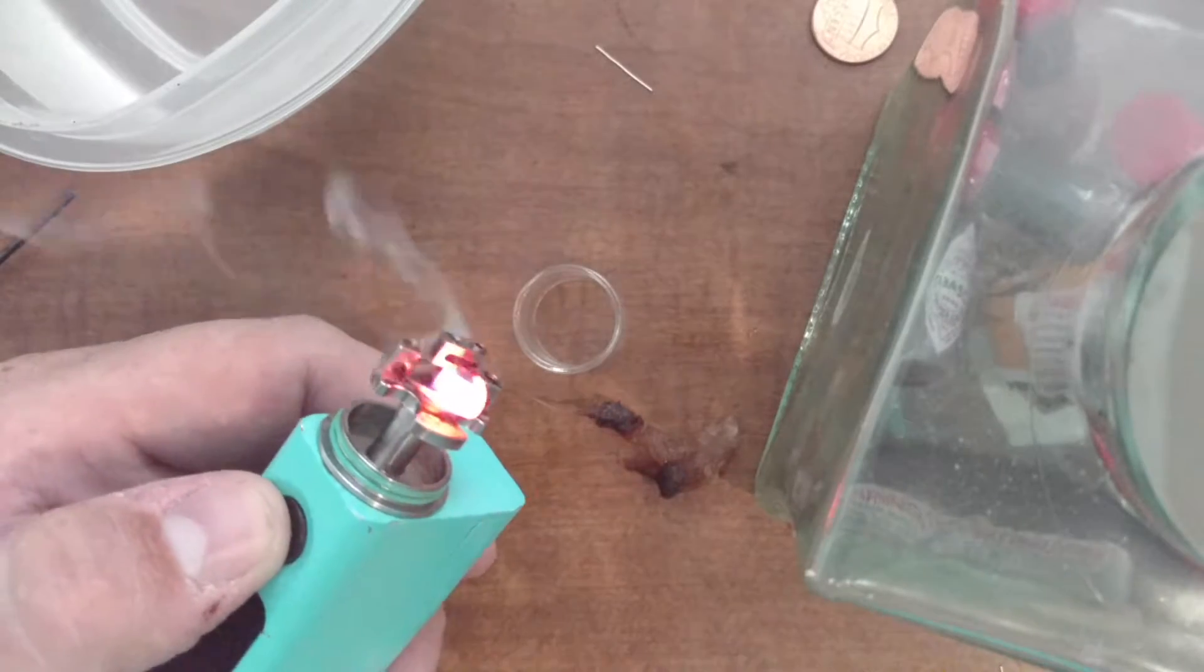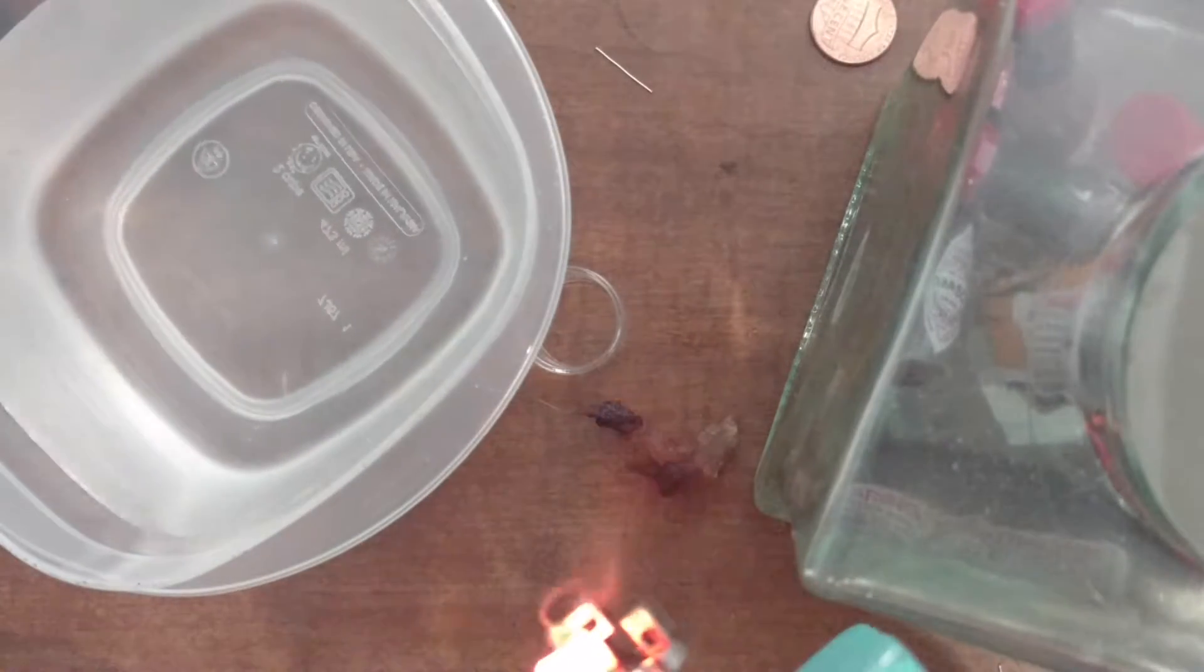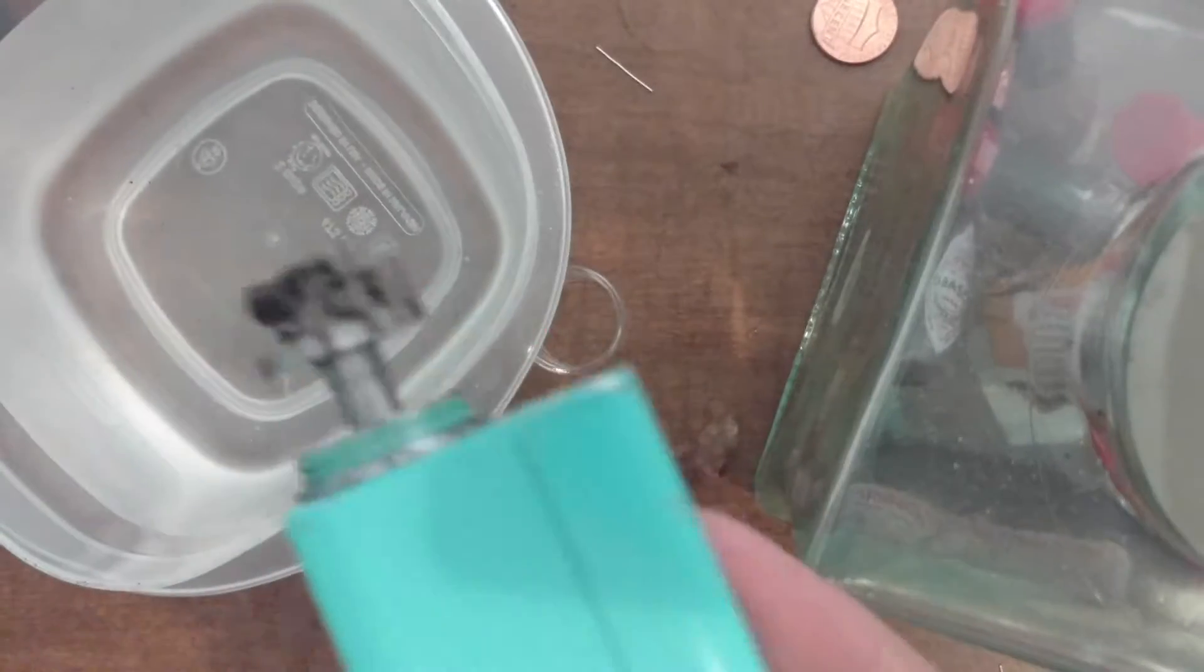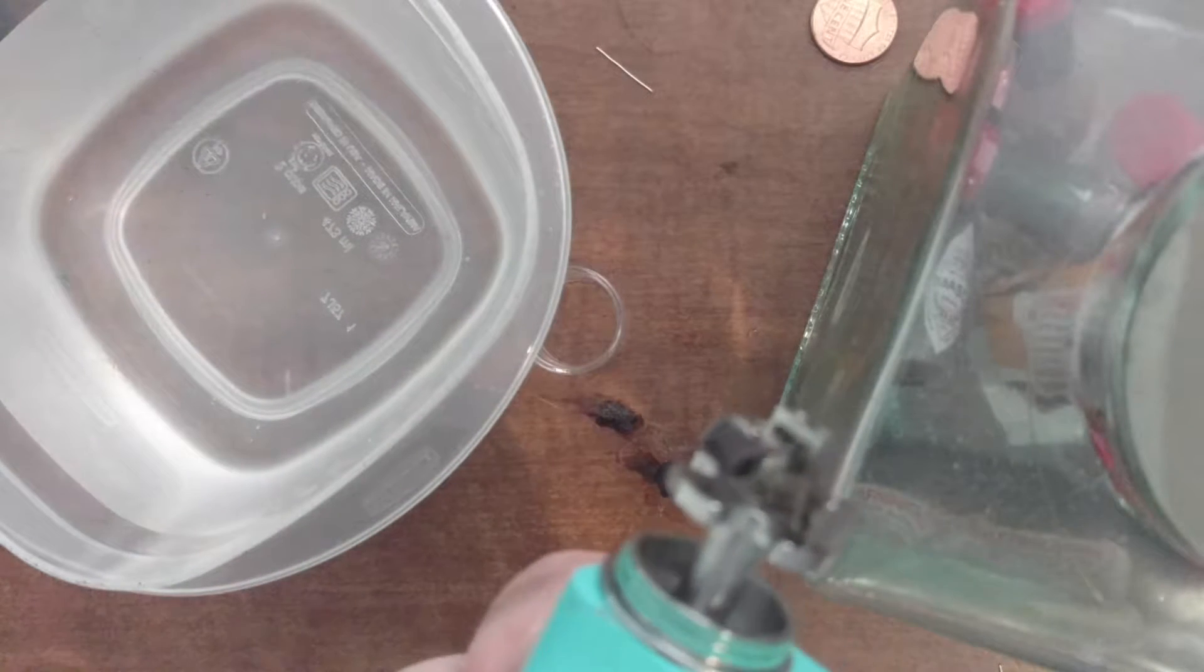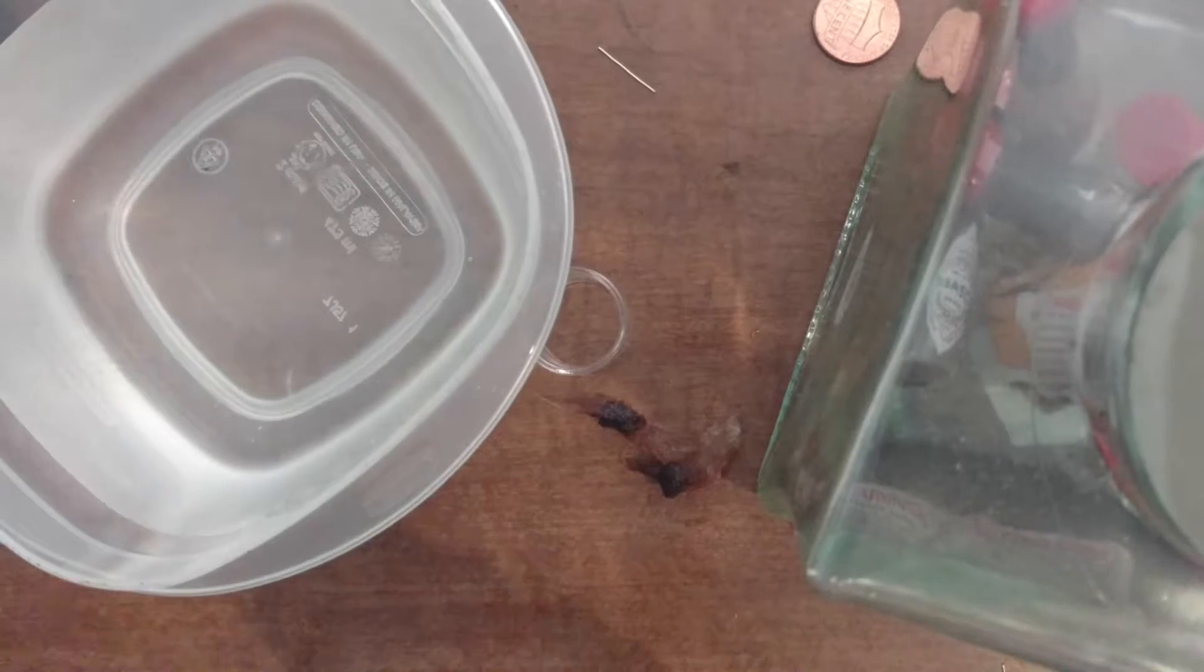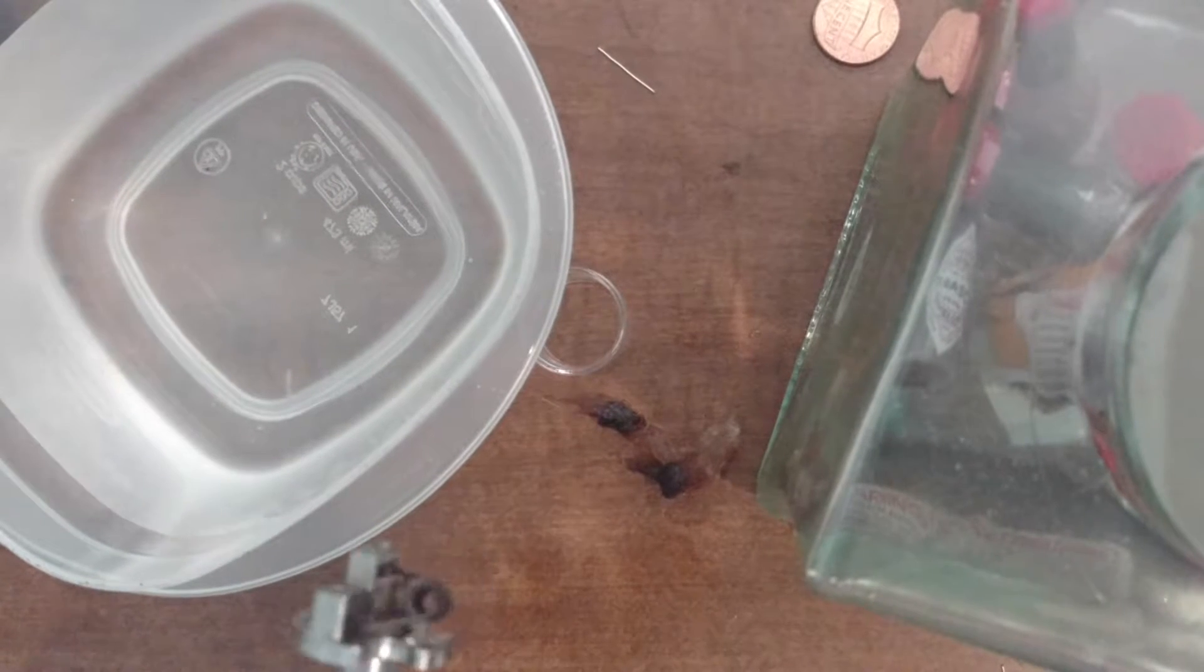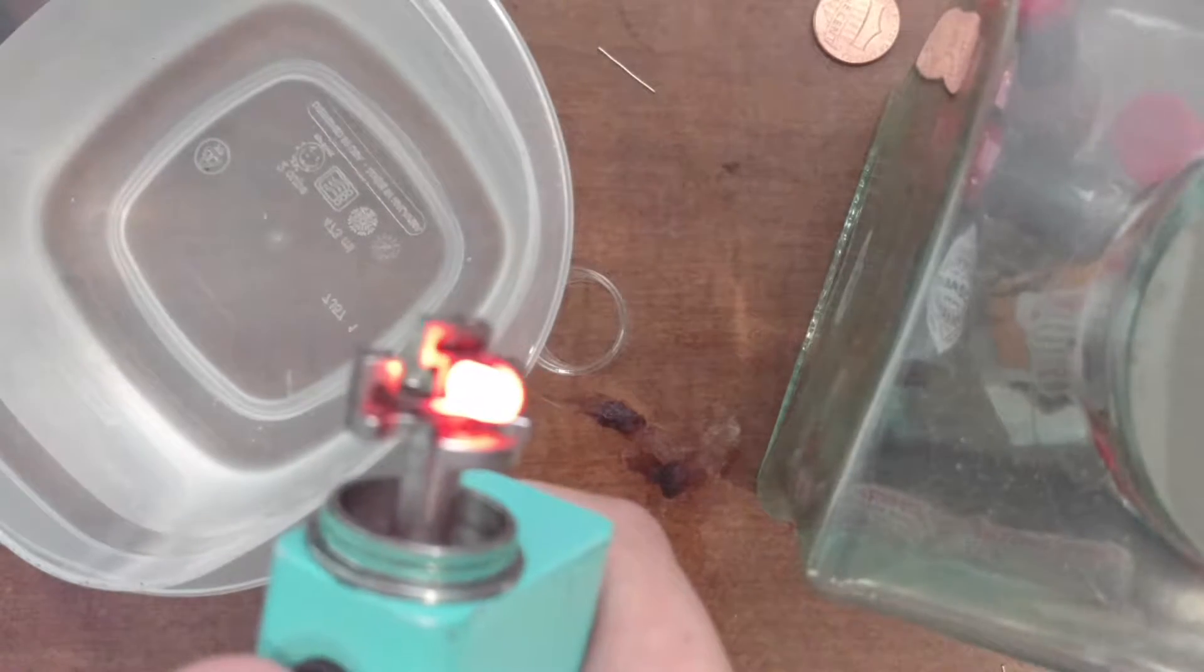Just get the heater up nice and hot. So I've got a little container of water here. Just heating it up real hot. Get it nice and glowy. And you drop it in there, right in the water. Get it all glowy again. I don't know if you can see, but most of the gunk really has come off of this coil. It's a very clean coil now.